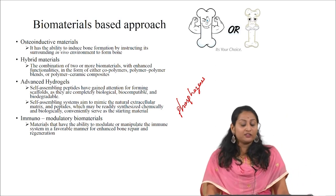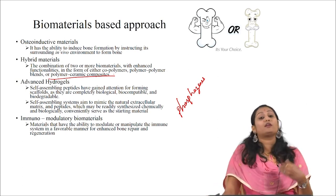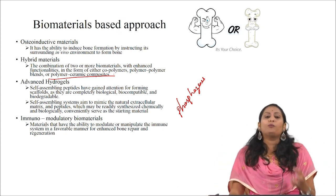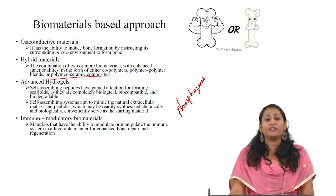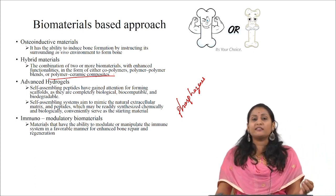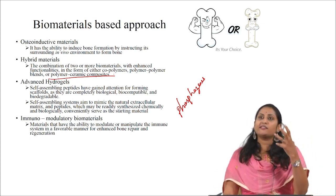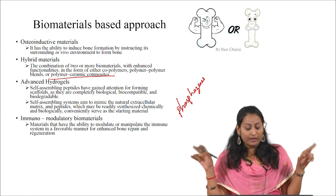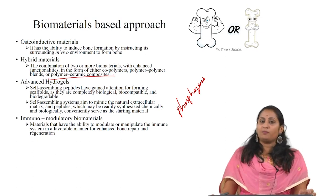The final hybrid class is polymer-ceramic composites, which are very useful in bone tissue engineering — these can be called biomimetic scaffolds, and have all the desirable properties for bone tissue engineering. The third class of biomaterial is advanced hydrogels. Because of their physical properties and structure, hydrogels have been widely used in tissue engineering applications. Recent research has shown that self-assembling peptides have gained enormous attention for forming scaffolds, as they are completely biological, biocompatible and biodegradable.